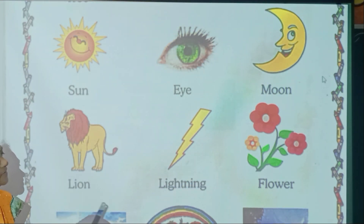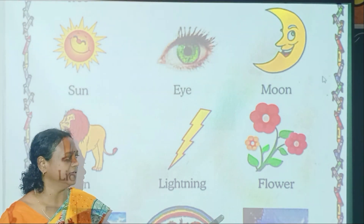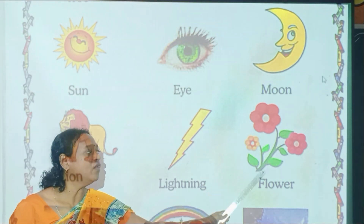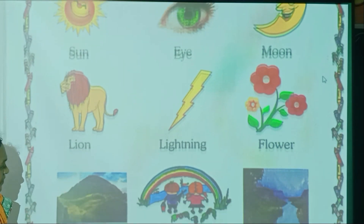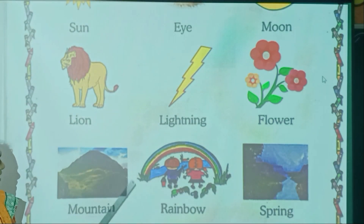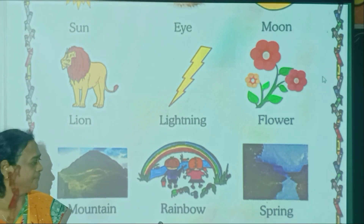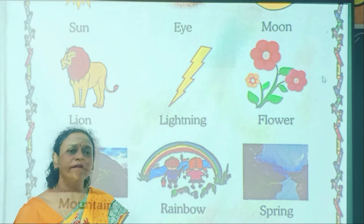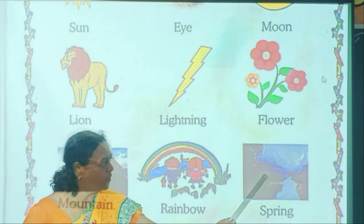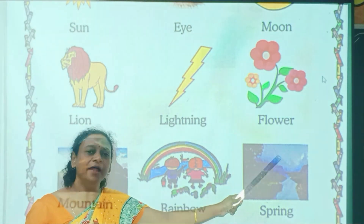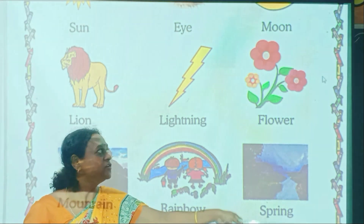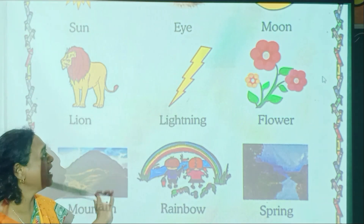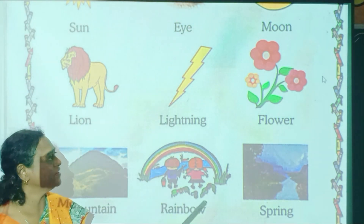Lion. Lightning. Lightning means electricity — bijli. Flower. And we can see here: this is mountain. This is rainbow. And this is spring — water that flows down from mountains. So these all are natural things.